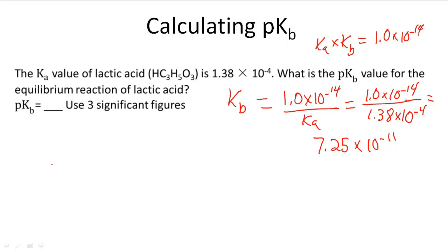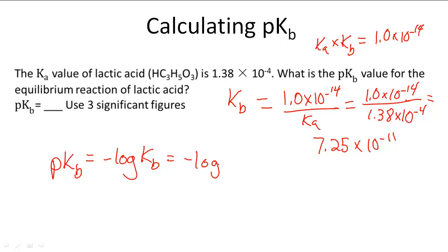Now we can do pKb equals the negative log of Kb. We know that Kb is 7.25 times 10 to the negative eleventh, so the negative log of 7.25 times 10 to the negative eleventh gives a pKb of 10.140.